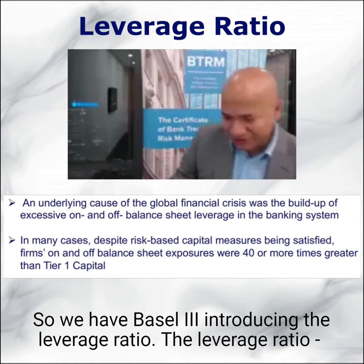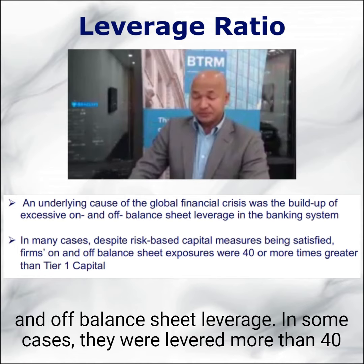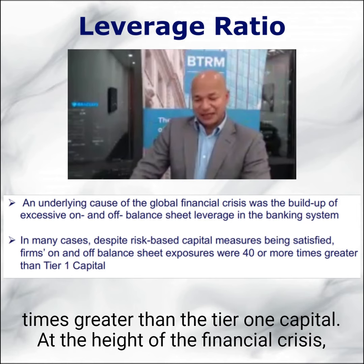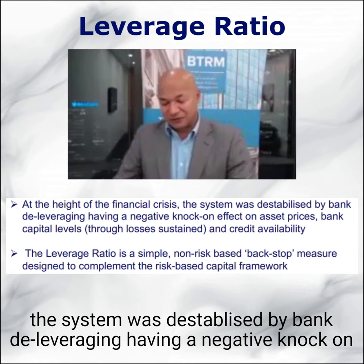Something else that Basel III introduced is the leverage ratio. An underlying cause of the global financial crisis was the buildup of excessive on and off balance sheet leverage. In some cases, banks were levered more than 40 times greater than their Tier 1 capital. At the height of the financial crisis, the system was destabilised by banks deleveraging, having a negative knock-on effect.